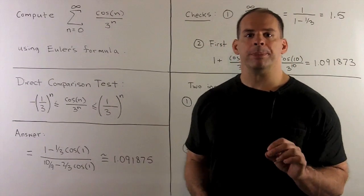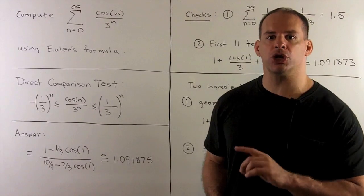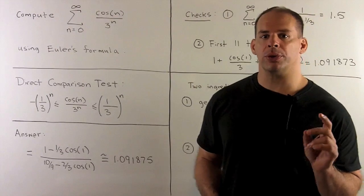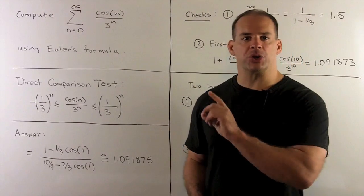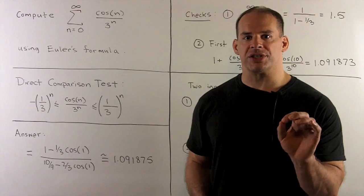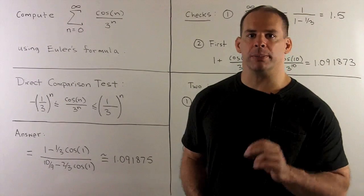So the trick will be we use Euler's formula to write our series as two convergent geometric series. Now, before we do that, let's first make sure that our series converges. We'll look at the precise sum, and then we'll verify our sum by doing some numerical work.